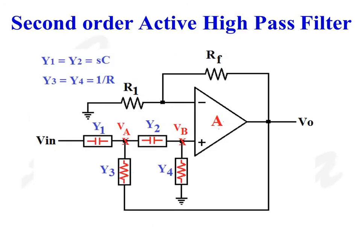This is the diagram of a second-order active high-pass filter. Here, Y1 = Y2 = SC and Y3 = Y4 = 1/R.